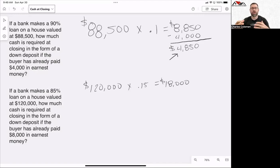And that number is going to be $18,000. Awesome. So the buyer is responsible for having $18,000 at the closing table when they go to purchase this property.